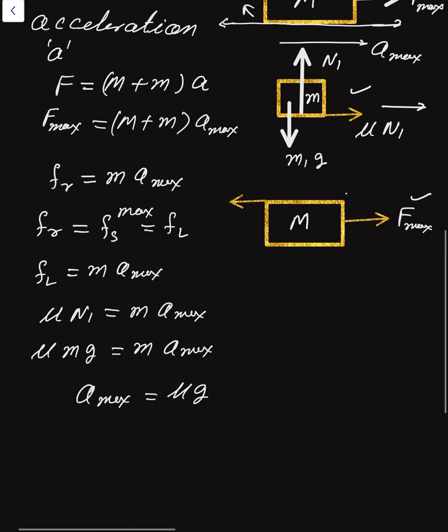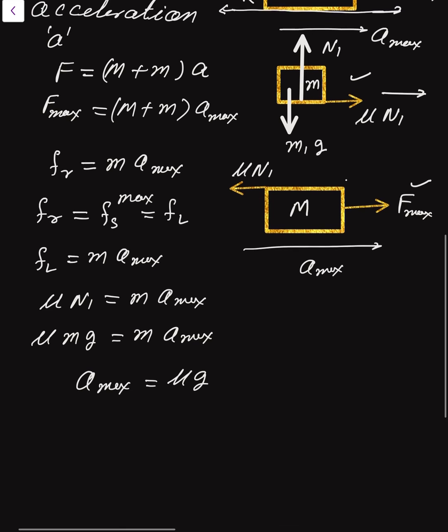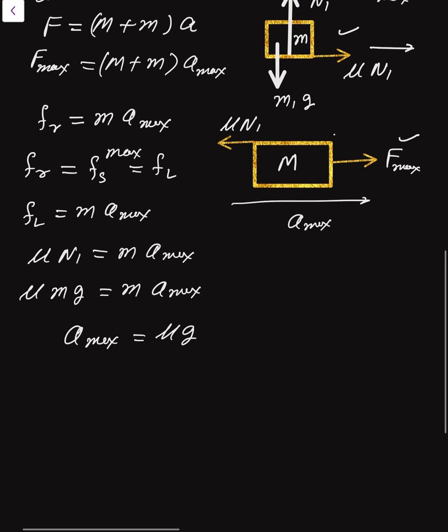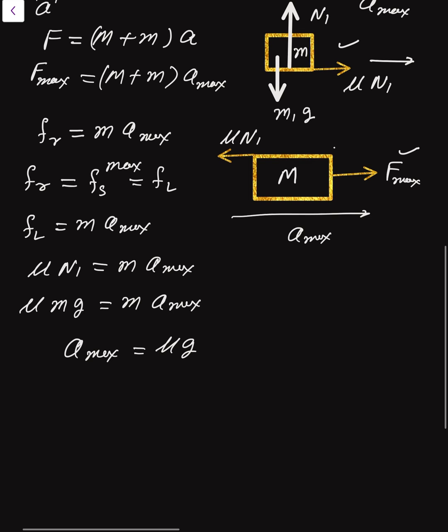Since N1 is m into g, a max is written as μ into g. That block is also moving at a max acceleration.